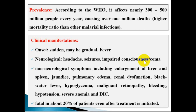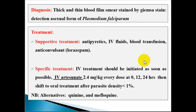Diagnosis is confirmed by blood smear with staining to identify ring forms of Plasmodium falciparum. Severe malaria requires IV treatment. The first-line treatment is IV artesunate at 2.4 mg/kg. Doses are given after the first dose, then at 12 hours, then at 24 hours. Blood smear is monitored to assess parasite clearance.